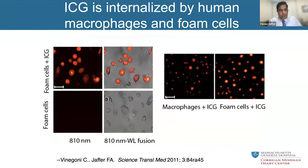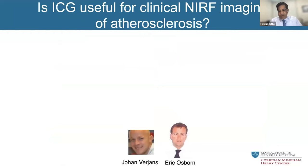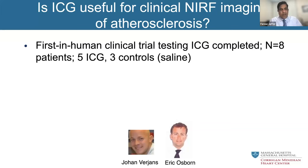We did additional mechanistic work and showed that ICG could bind foam cells — collaborative work with Peter Libby showing that macrophages loaded with lipids to become foam cells could robustly take up ICG, as well as non-foam cell macrophages that were stimulated. We showed ex vivo that it could bind human specimens. Could it actually bind plaques if injected intravenously? Johan and Eric led a first-in-human study of ICG for targeted imaging at MGH in eight patients — five injected with ICG at the standard retinal dose of up to 25 milligrams, and three controls.